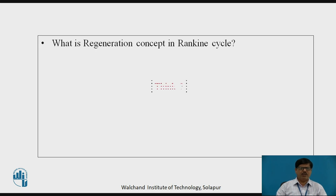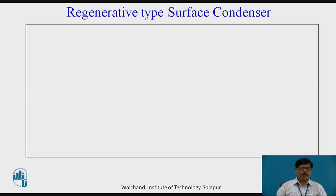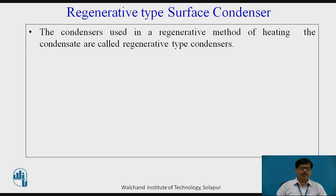Now, what is the regeneration concept in Rankine cycle? In the Rankine cycle, to improve efficiency, the steam when expanding in the steam turbine is bled at a certain point and this steam is mixed with the condensate coming out of the condenser into a number of feedwater heaters. The feedwater heaters used can be 2, 3, 4 or more, where the condensate is heated with the help of bled steam, and this regenerative concept is utilized for increasing the efficiency of the Rankine cycle. Depending upon that, another type of surface condenser is called the regenerative type of surface condenser. The condensers used in the regenerative method of heating are called regenerative type surface condensers.